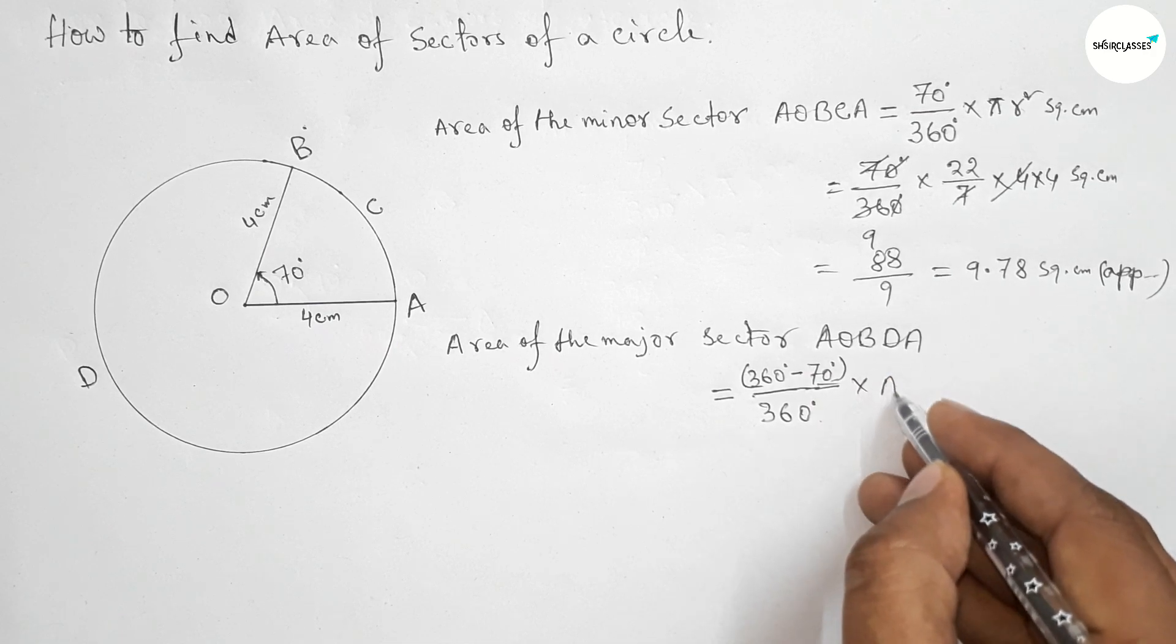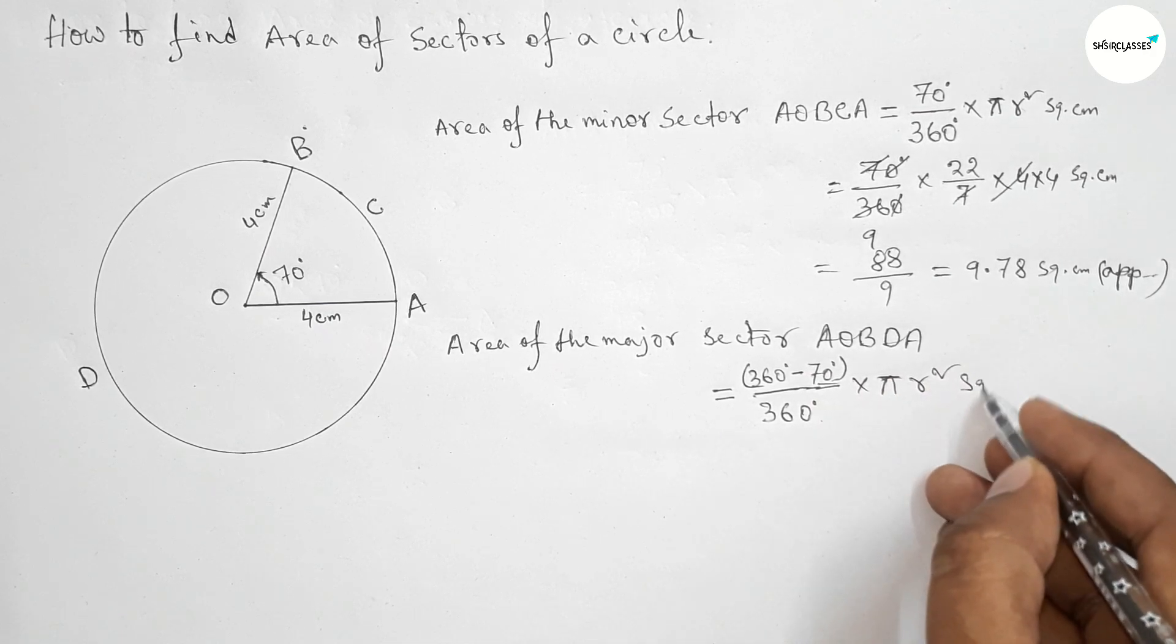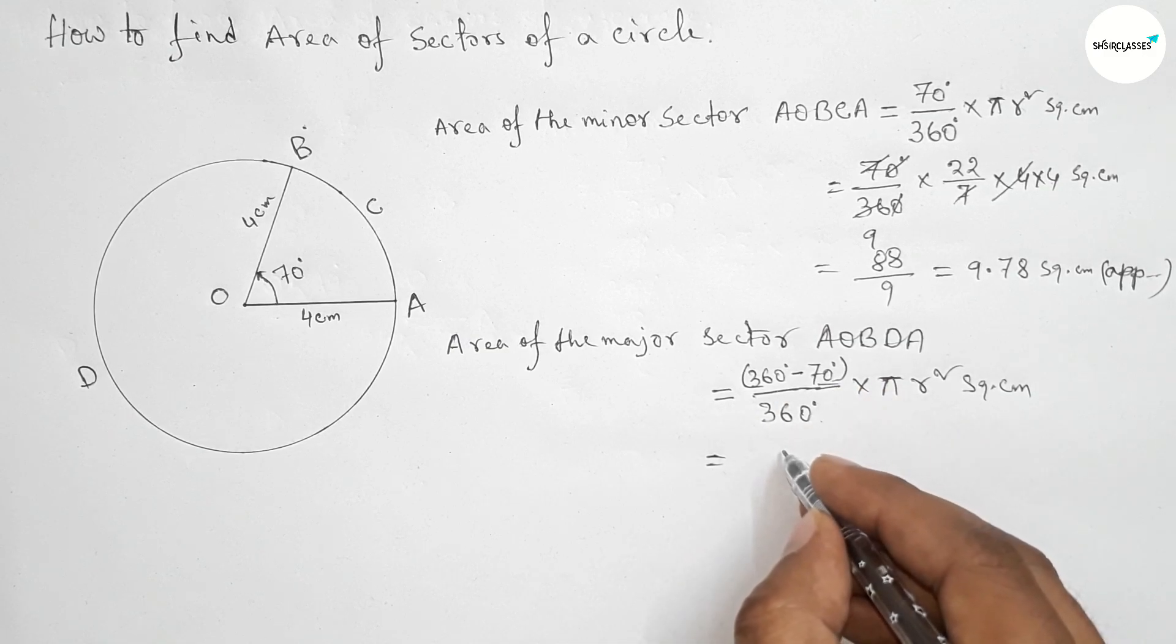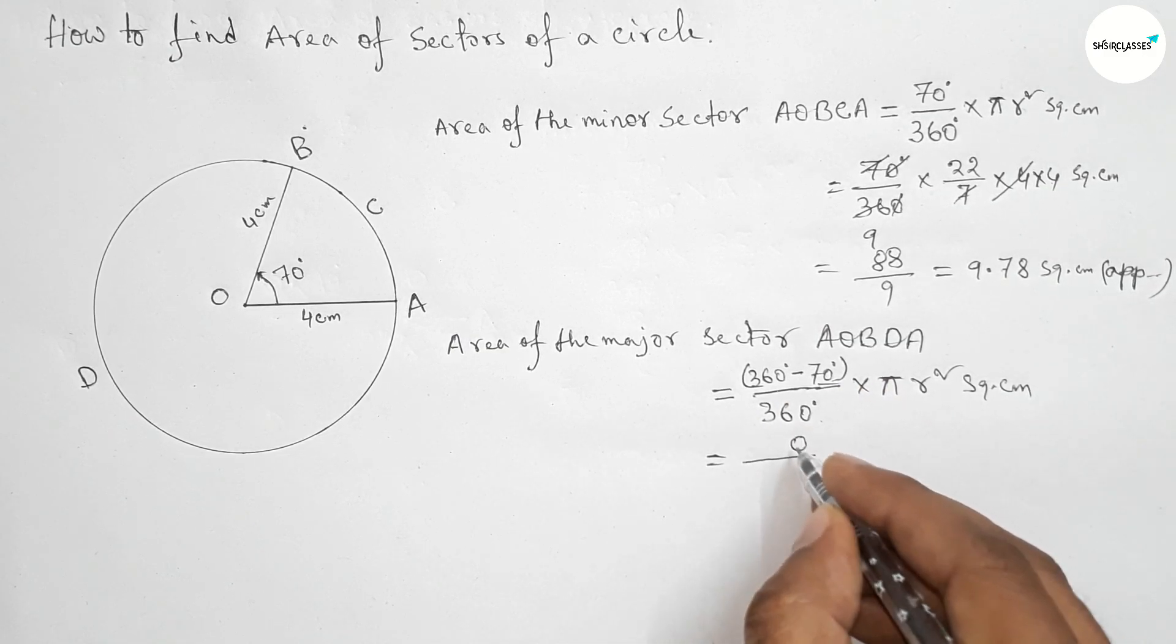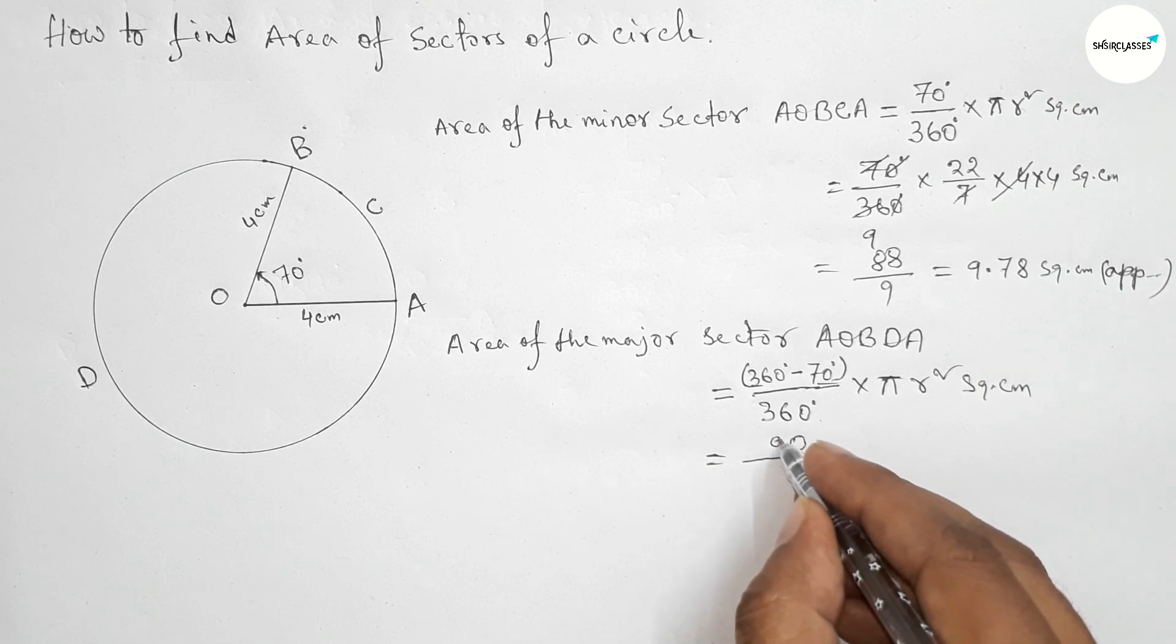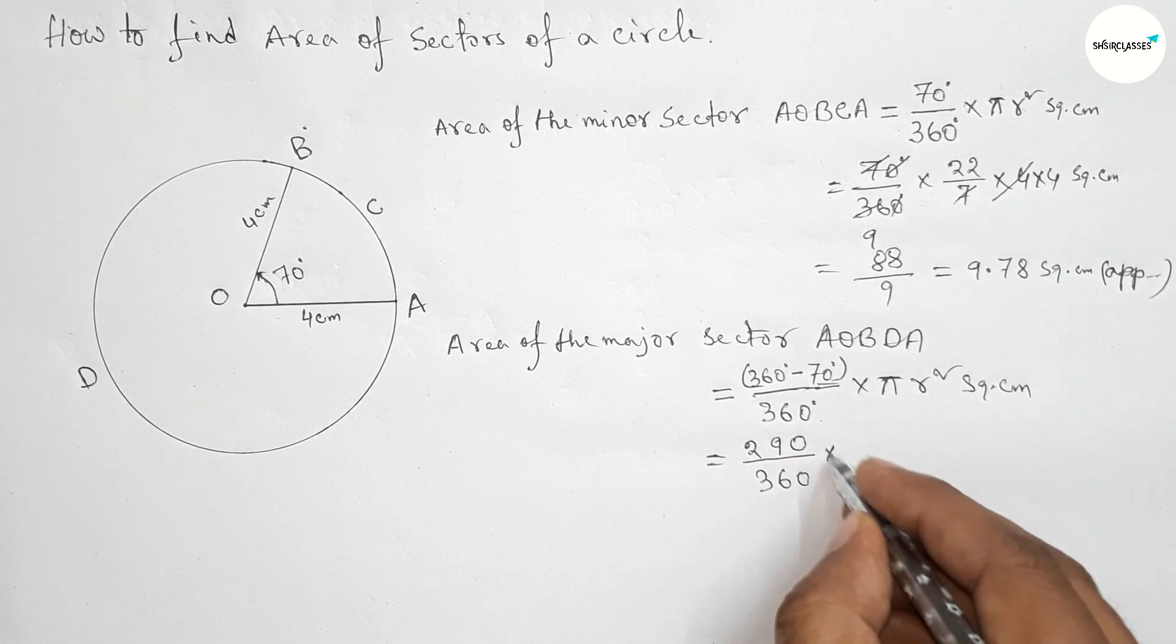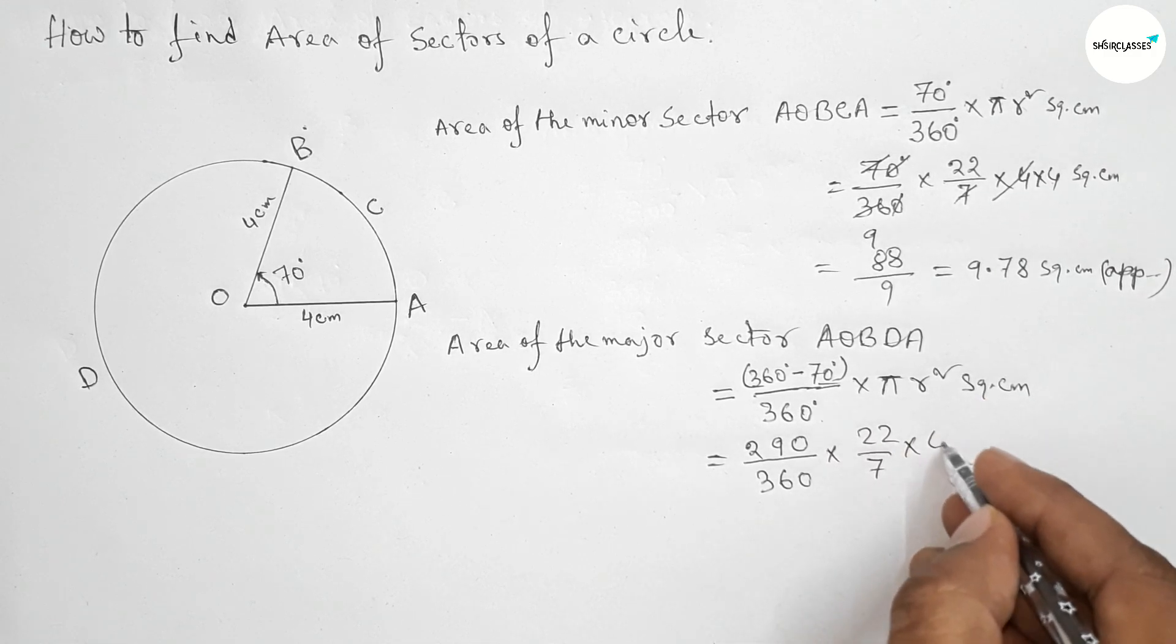Times total area πr² square centimeters. So here this is 290 degrees by 360 and 22 by 7 and the value of r.